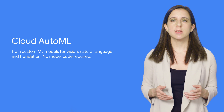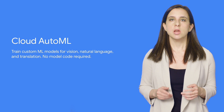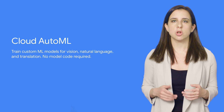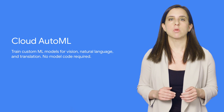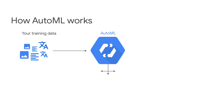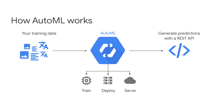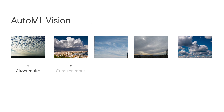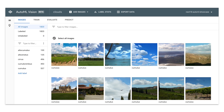Announced in beta at Next, AutoML lets you train Vision, Natural Language, and Translation models with your own data — no model code required. In the AutoML section, I showed live demos of each variant in the AutoML UI. Starting with Vision, I demoed a model that can detect the type of cloud in an image. While you could use the Vision API to tell you an image has a cloud, we wouldn't expect it to identify the scientific name of a cloud. This model can classify five different types of clouds.